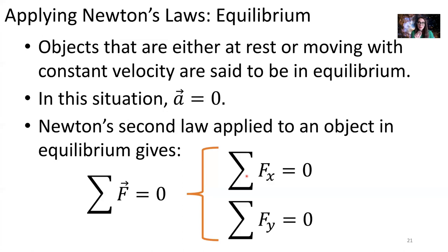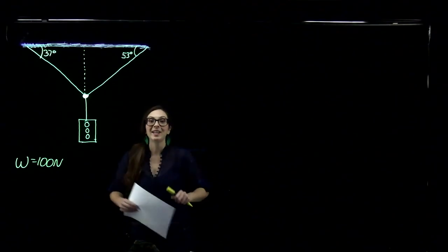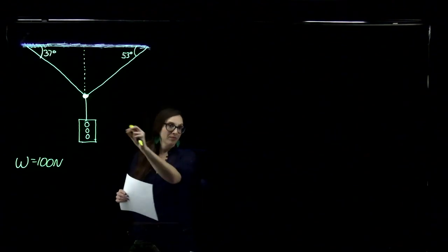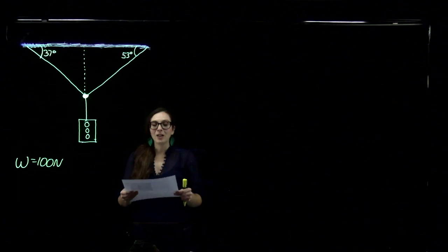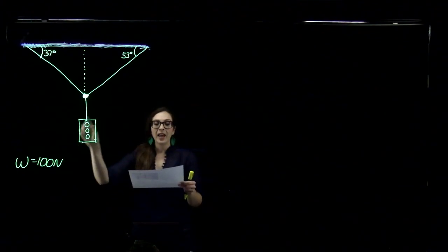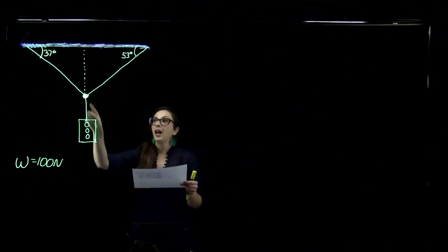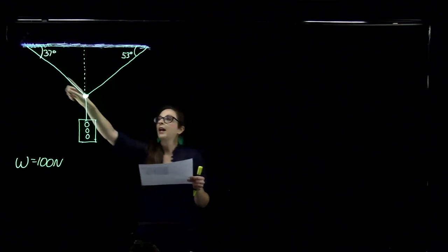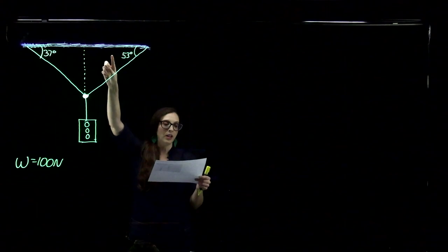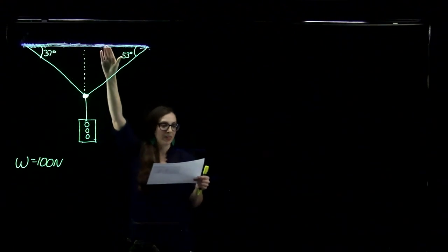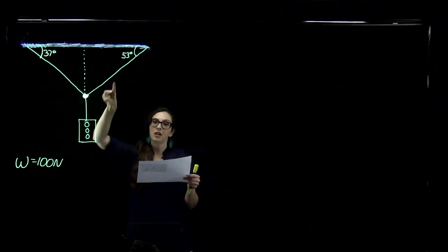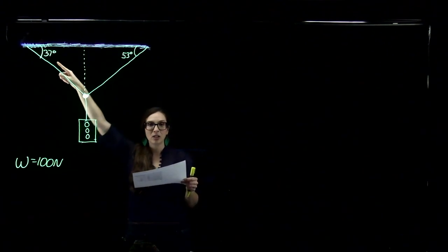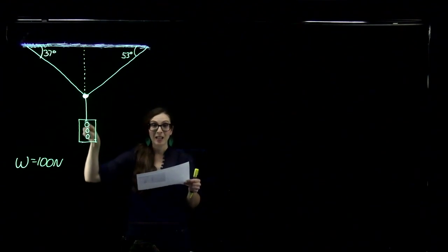We've got a couple examples of those types of problems right here. This is an equilibrium problem. Here we have a traffic light weighing 100 newtons. It hangs from a vertical cable, tied to two other cables that are fastened to a support above. The upper cables make an angle of 37 degrees and 53 degrees with respect to the horizontal. We want to find the tension in the cables attached to the support above — T1, T2, and in the process we're also going to find T3.